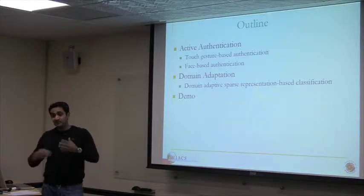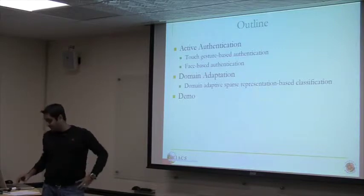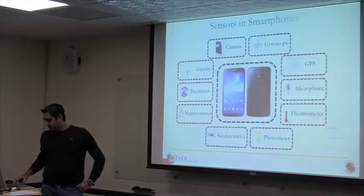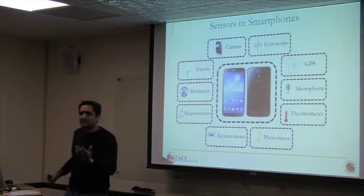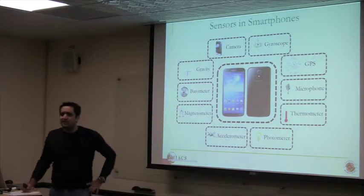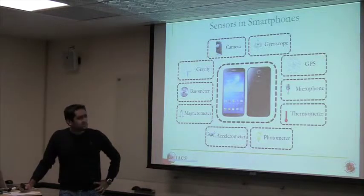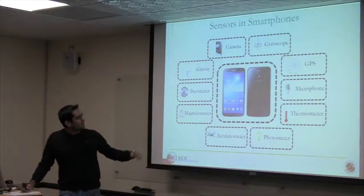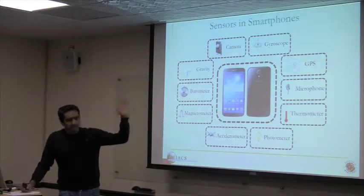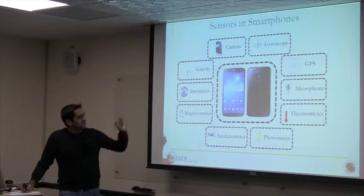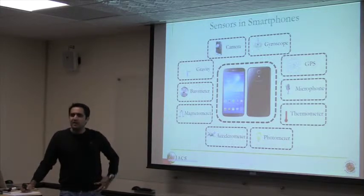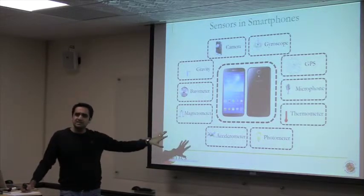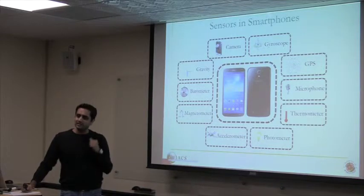I'll show you a couple of videos that show how we implemented this. A recent smartphone comes with a variety of different sensors, like a gyroscope, accelerometer, camera, microphone, GPS sensor, and so on. The idea is to somehow make use of these sensors to continuously authenticate users.